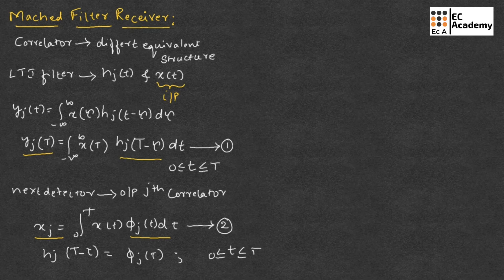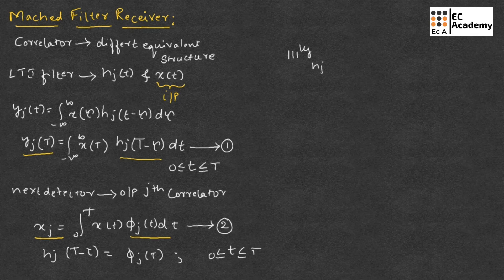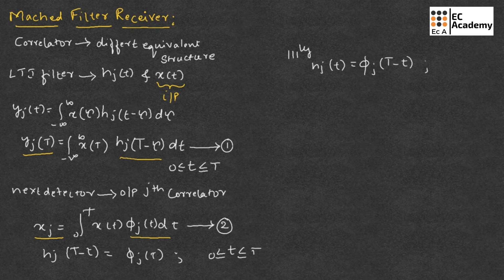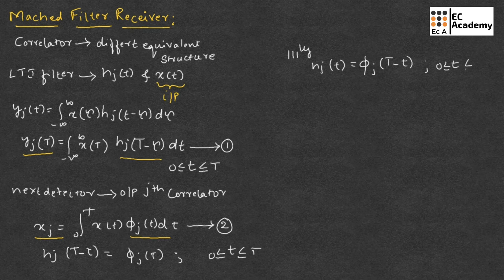Similarly, we can express the above expression as Hj of t is equal to phi j of t minus t. Again, this is for t value ranging between 0 to t.